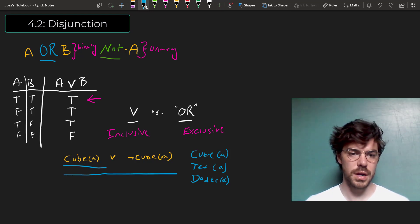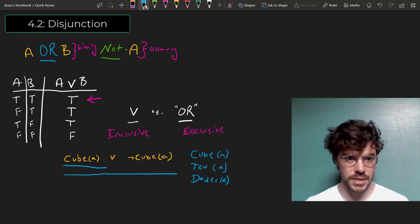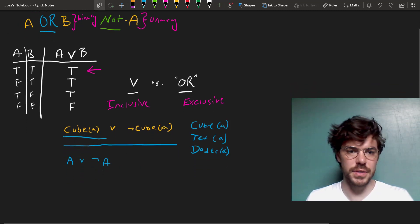This sentence actually belongs to a very special class of sentences, which we'll be dealing with later on, which are called tautologies. They're always true. And this one has the form A or not A. Let's look at one further example.